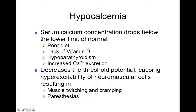Hypocalcemia means low serum calcium. This comes from poor diet, lack of vitamin D, hypoparathyroidism, or increased calcium excretion. It decreases threshold potential, causing hyperexcitability, which leads to things like muscle twitching, cramping, and paresthesias — abnormal tingling or sensation in skin.